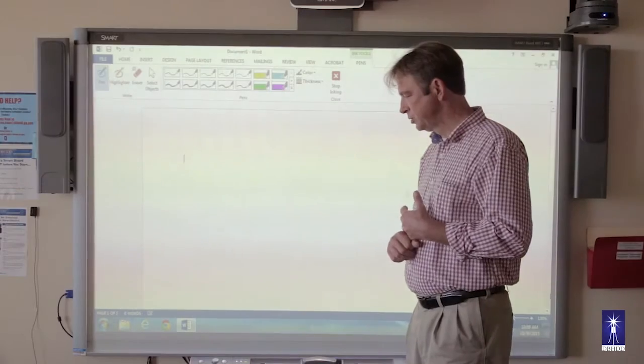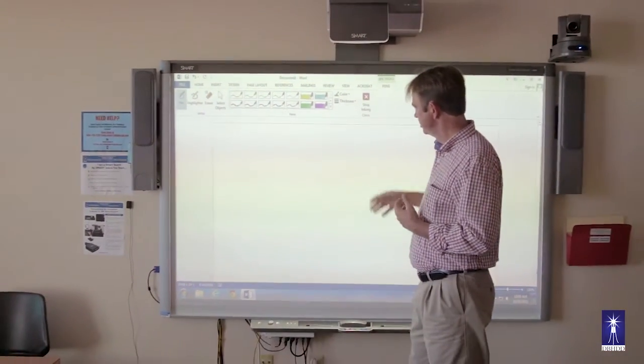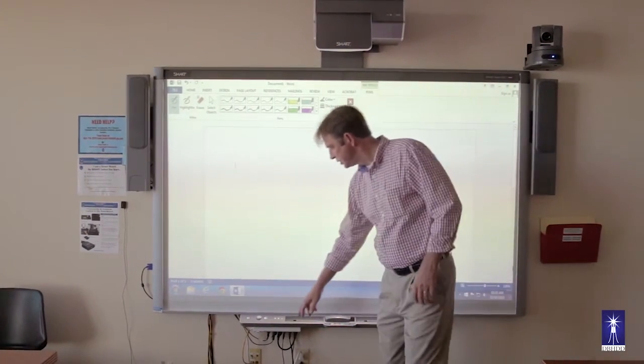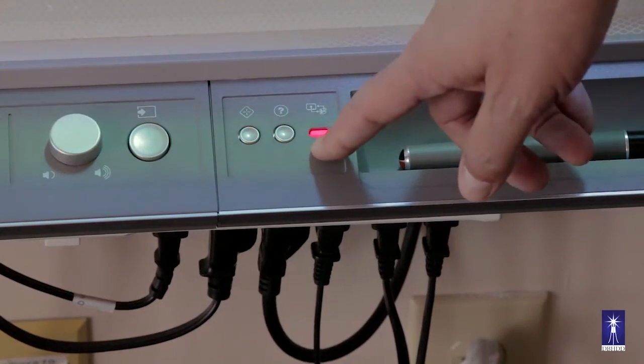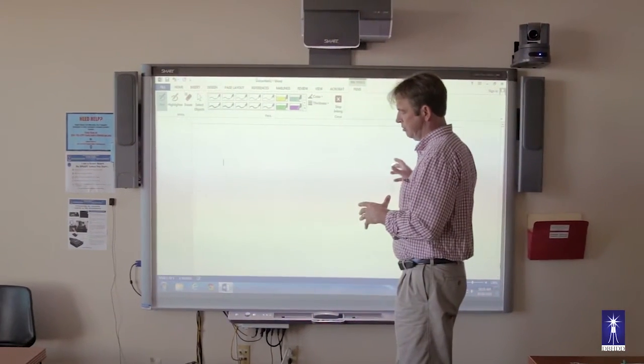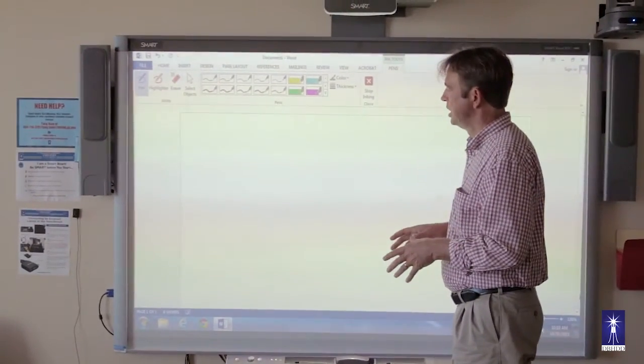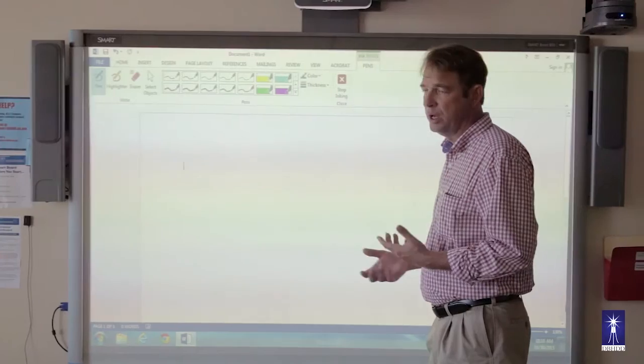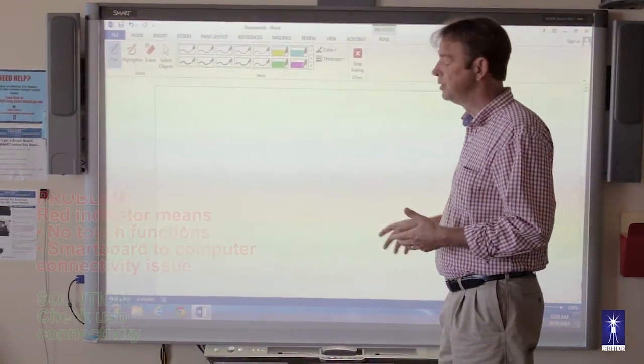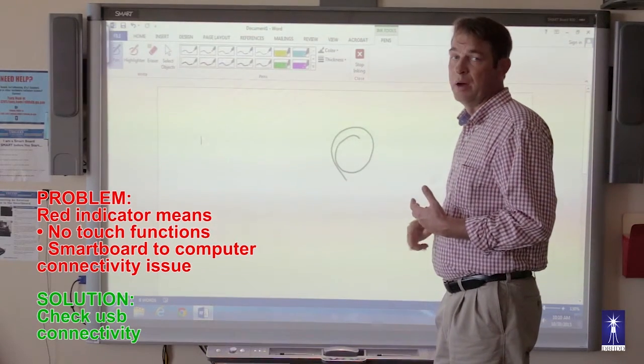Alright, so there will be situations where you've got your PC on, you've got your smart board on, the desktop is up, but you look down and you see that this indicator light is red. What that means is there's no communication as far as touch between the smart board and the PC. It'll still function, you can go ahead and open up different applications using the mouse. But as far as the touch portion of it, that won't function.